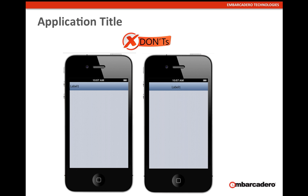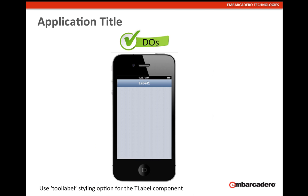Here's an example of a don't: we have a toolbar with a label designed to be our application title, but we need to ensure we're styling the label correctly and aligning it correctly. What you should do instead is use the tool label styling option for the T-Label component. The T-Label should be parented to your tab control and aligned to center, with text align also set to center.